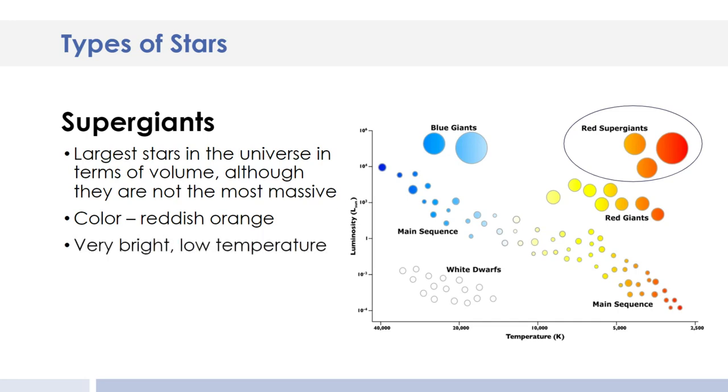They're going to be reddish orange. And like I said, they're very bright. And the reason that they're so bright is because they are so big. They are low in temperature. You're going to find them in the upper right corner of the HR diagram.